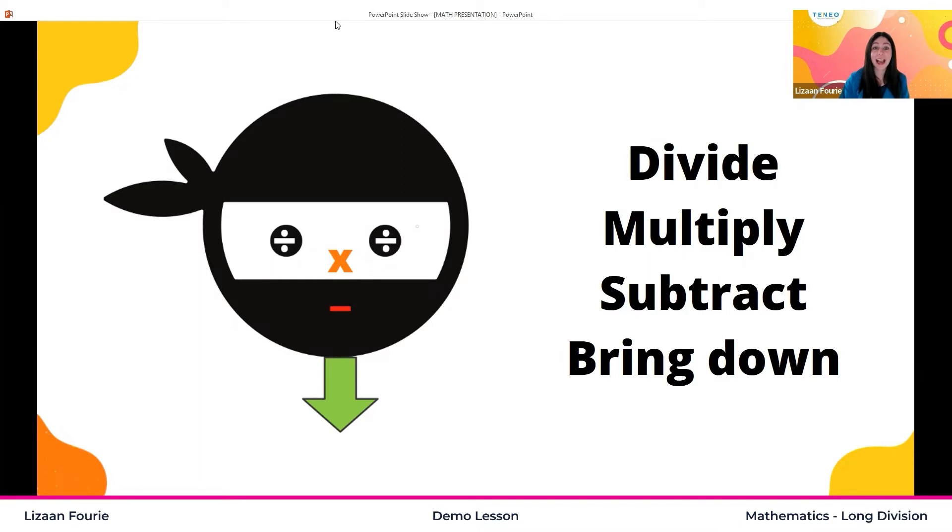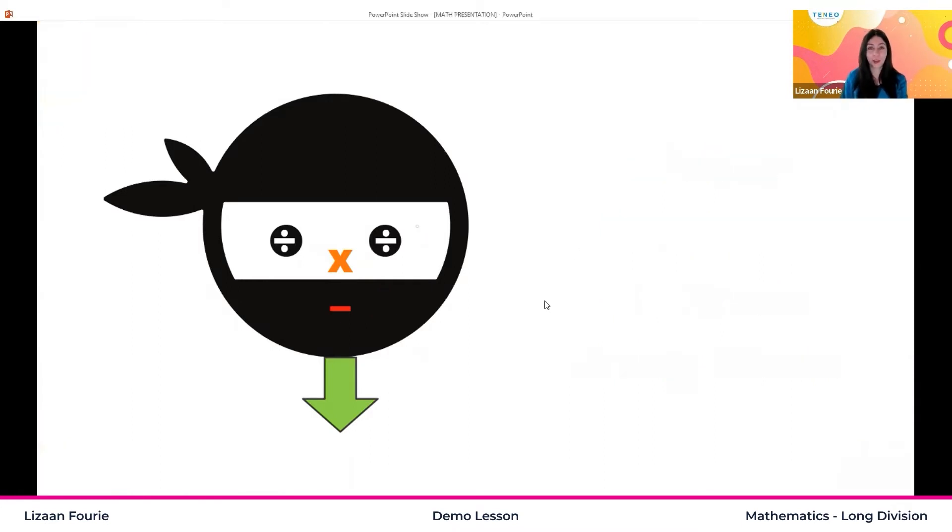When we look at the eyes, we can see that is where we need to divide. When we look at the nose, that is where we need to multiply. Our next step will be to subtract. And the last one is to bring down the next number. Next, I want you to draw our division ninja in your own workbook. Let's start and I'll do the same on screen.